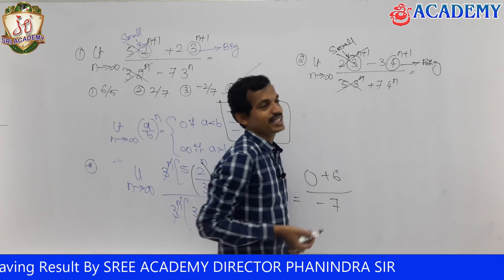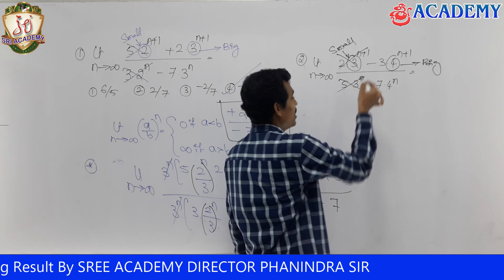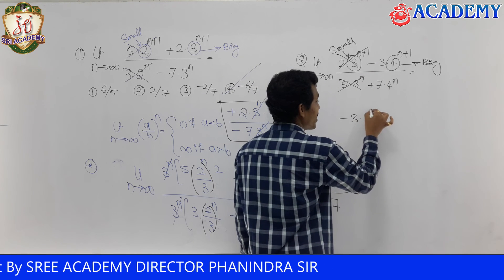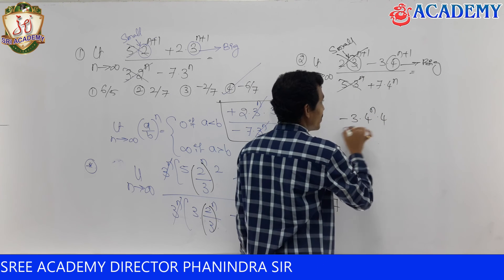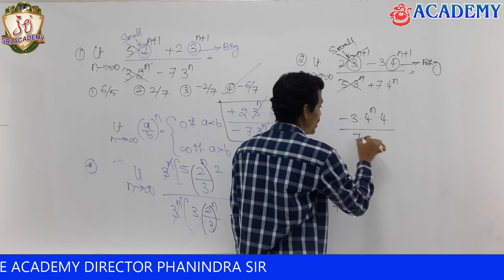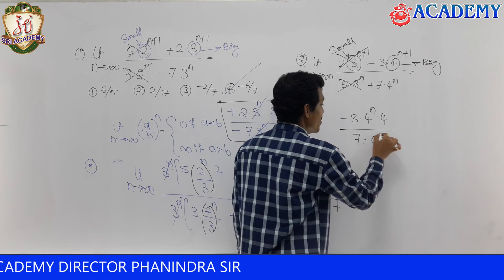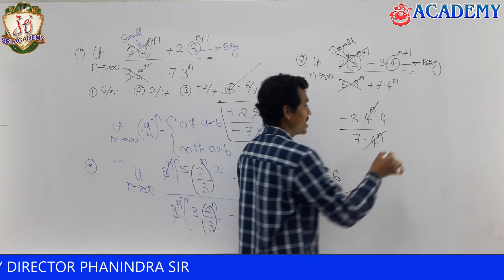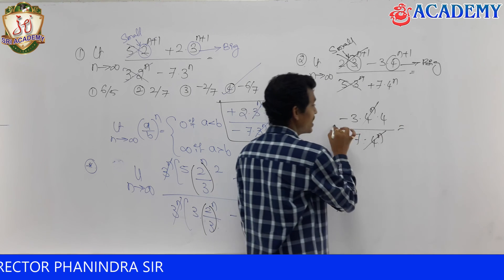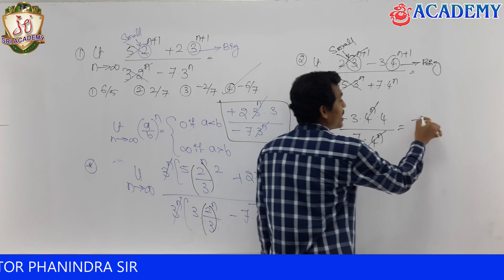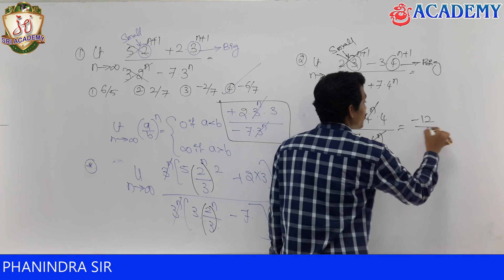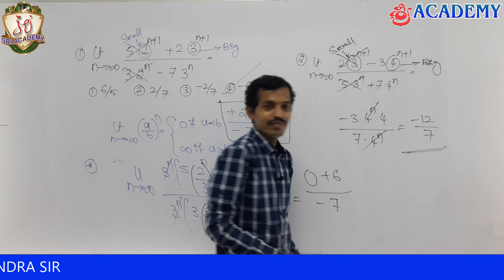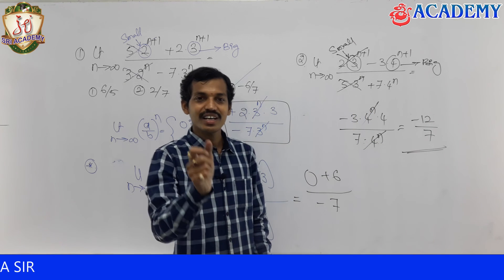Now eliminate Pawan Kalyan — eliminate the smaller base terms. What remains: minus 3 into 4 power n into 4 divided by 7 into 4 power n. The 4 power n cancels, giving minus 12 divided by 7. Simple and sweet answer. With this trick you can remember the method easily.